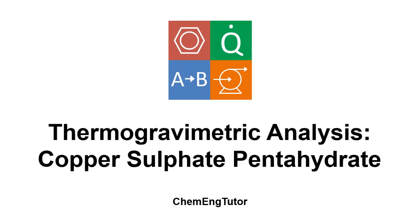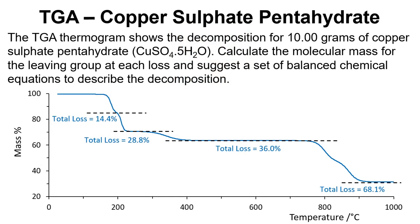In this video we're going to examine the thermal decomposition of copper sulfate pentahydrate. Here is the problem set out for us. We've got a thermogram for the decomposition of 10 grams of copper sulfate pentahydrate and we need to calculate the molecular mass for the leaving groups at each loss and suggest a set of balanced chemical equations to describe the decomposition. We can see we've got the TGA trace here that goes down in several steps as the copper sulfate pentahydrate loses different groups.